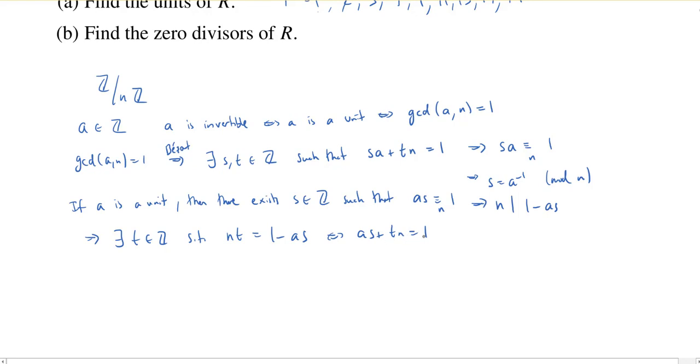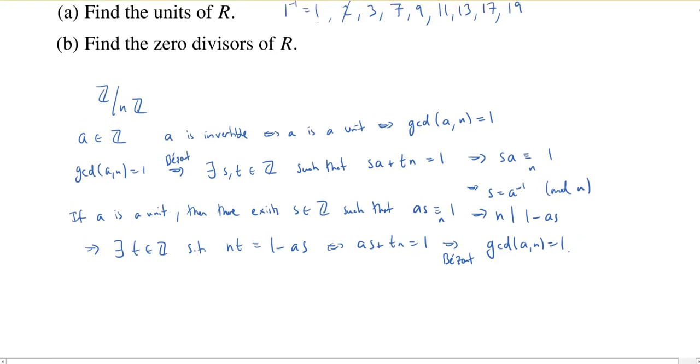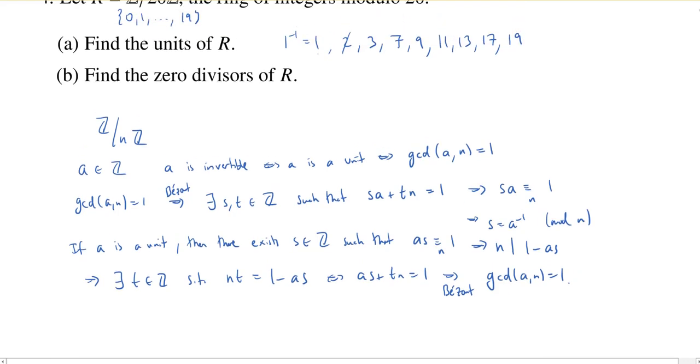And that, by Bezout's lemma, tells us that a and n are relatively prime. So this implies, again, by Bezout, that a and n have GCD equal to 1. So this gives us this equivalence between the GCD of a and n being 1 and a being a unit. So that justifies our work up above.